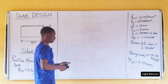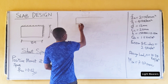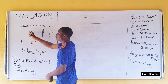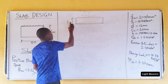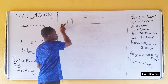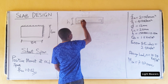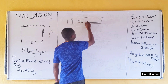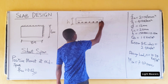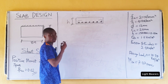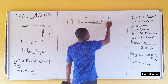Now let's find the effective depth of the slab. But before that, let me draw the side view of the slab. This is the plan view of the slab. This is the side view of the slab. The thickness of the slab is h. This is how the slab is being reinforced. The effective depth of this slab is the height from the top of the slab to the center of the main bar.